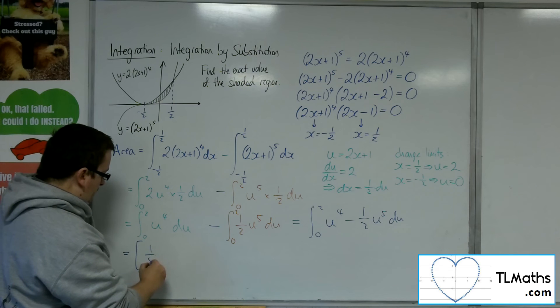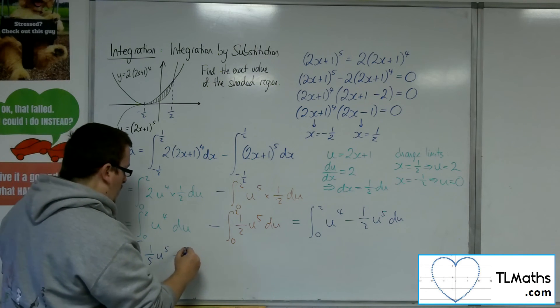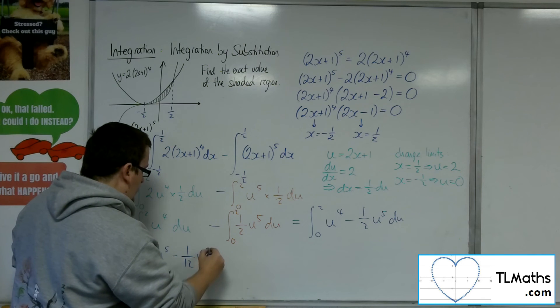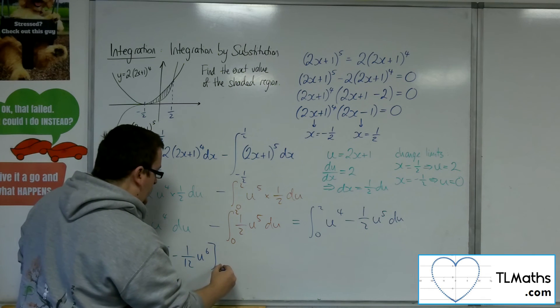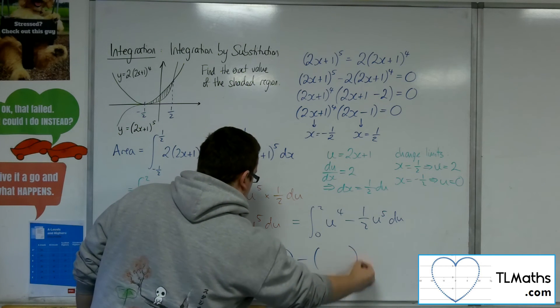So I'm going to have 1 fifth u to the 5, adding 1 to the power, divided by the new power, take away 1 twelfth u to the 6, evaluated between 0 and 2.